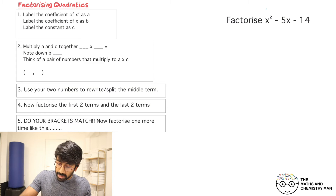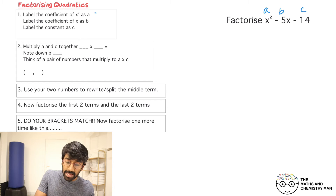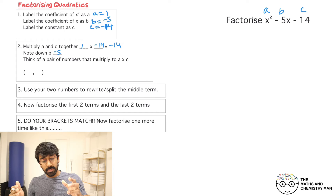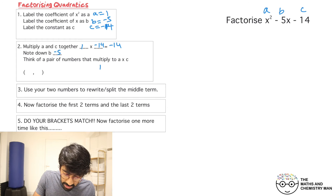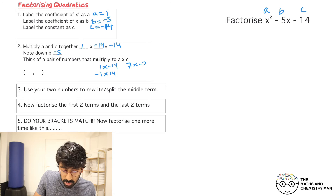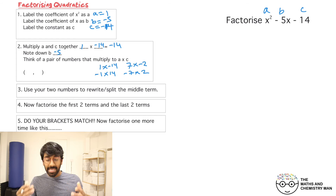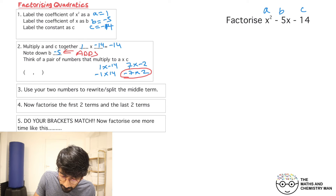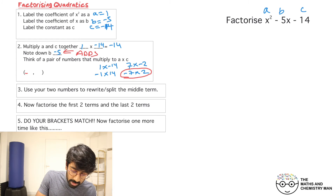Here's another one. Label a, b, and c: a is 1, b is minus 5, and c is minus 14. Multiply a and c: 1 times minus 14 is minus 14. Write down b, which is minus 5. Think of pairs that multiply to minus 14: 1 and minus 14, minus 1 and 14, 7 and minus 2, minus 7 and 2. Pick the one that adds to minus 5.